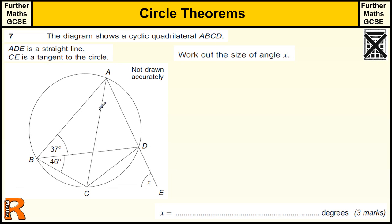Okay, so this question we have a circle, cyclic quadrilateral A, B, C, D. So that means that all the points of the quadrilateral are on the surface of the circle, on the circumference of the circle.